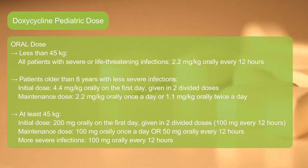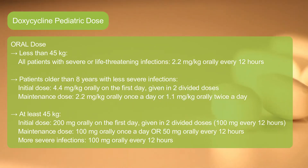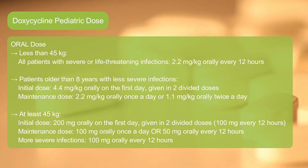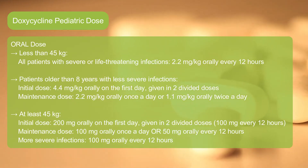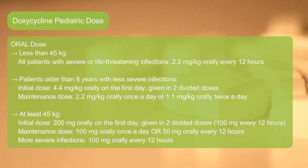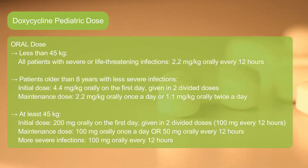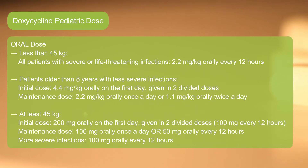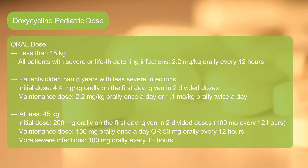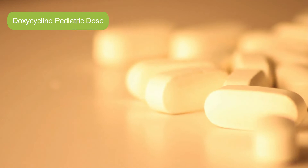Pediatric oral dose, at least 45 kg: Initial dose 200 mg orally on the first day, given in 2 divided doses of 100 mg every 12 hours. Maintenance dose: 100 mg orally once a day, or 50 mg orally every 12 hours. For more severe infections: 100 mg orally every 12 hours.